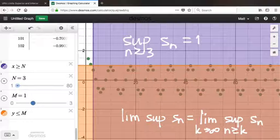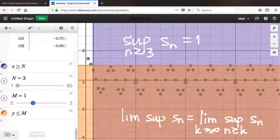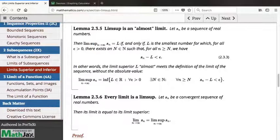There should be a version of this definition that looks like that, because a lim sup really is a limit. It's a kind of limit. Here is our definition that looks an awful lot more like a limit than it does a suprema.